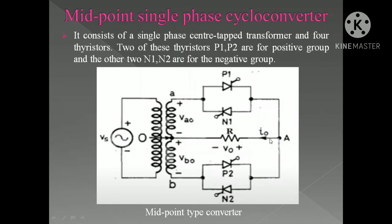We are considering the output current direction as positive, and the polarity of the resistive load as positive. Although this is an AC source so the polarity keeps changing with the frequency, whenever a positive alternation occurs, Va0 is positive and Vb0 has the same polarity. At that time, thyristors P1 and N2 will be forward biased. You can trigger these two alternately and get a high-frequency cycloconverter output across the resistor. Similarly, during the negative alternation, Va0 and Vb0 have the same polarity and thyristors N1 and P2 will be forward biased.